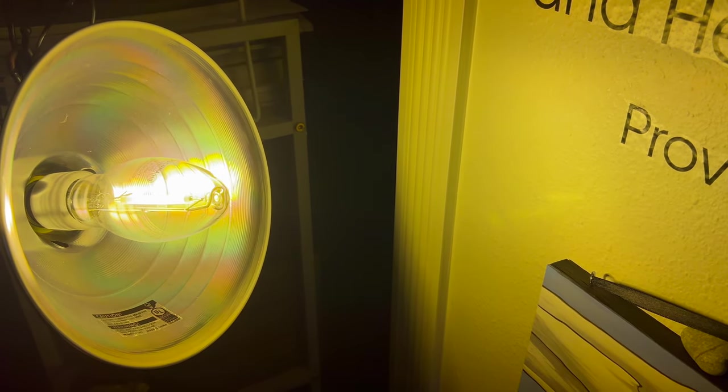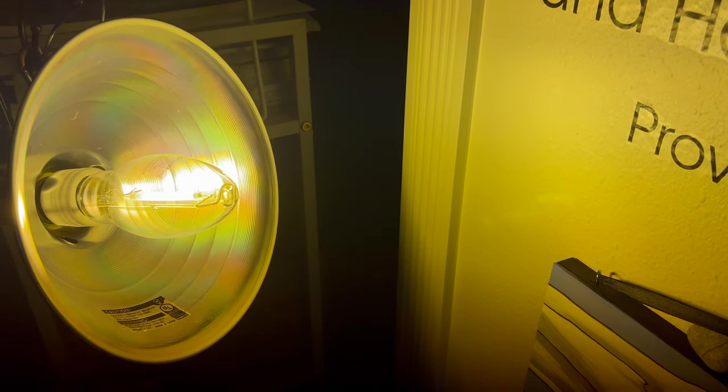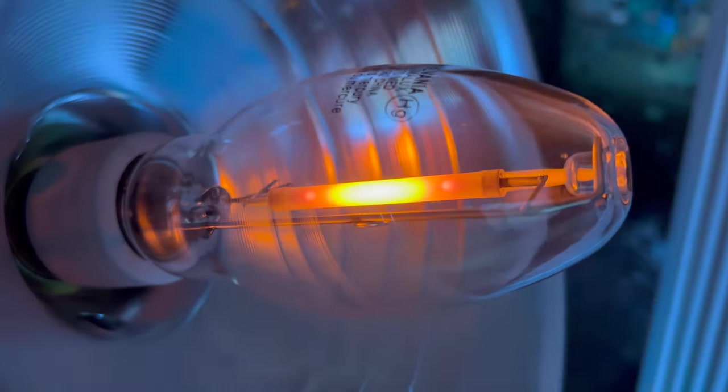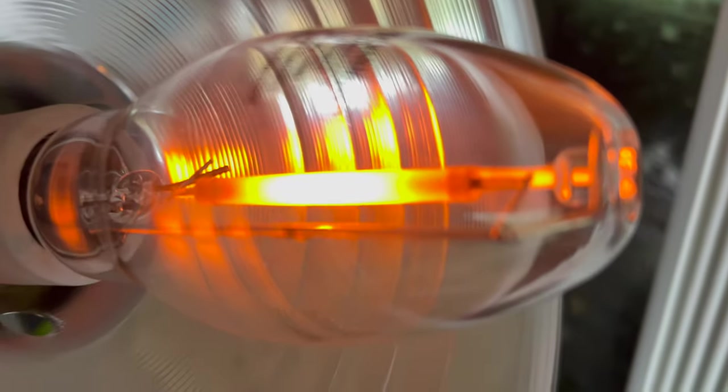The 400 watt lamp produces around 100 lumens per watt. As you scale from 70 watts to 100, 200, 250, 400...